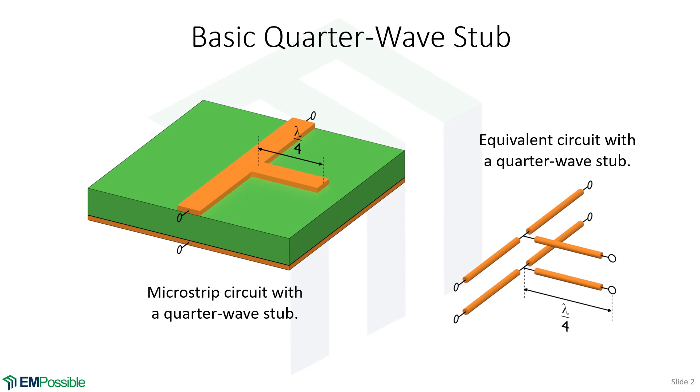So we start this discussion with a basic quarter wave stub. And what we're looking at on the left is a microstrip. So we have a ground plane on the bottom, we have a substrate, and we have our microstrip.